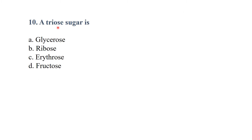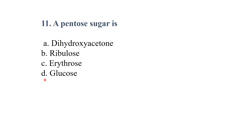A triose sugar is — options: glycerose, ribose, erythrose, or dihydroxyacetone. The answer is glycerose.